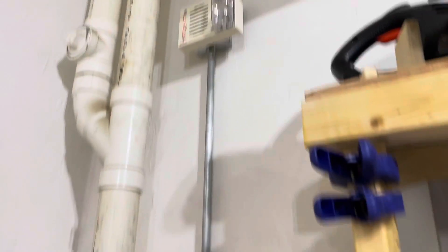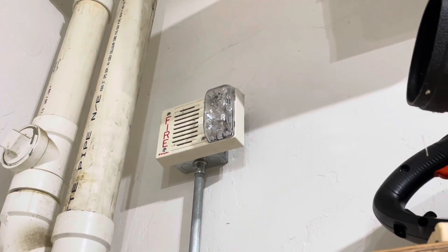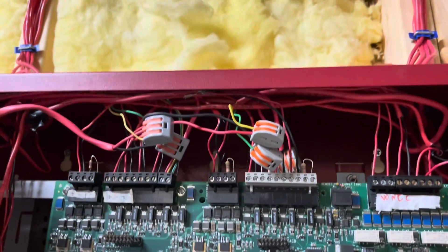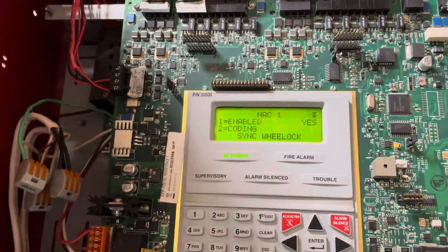So the system is now officially done. You can see I have the pull station and speaker strobe installed in the garage. Gone ahead and tied in my speaker circuits. The last thing I have to do is go to the next selection and select wheel lock sync.